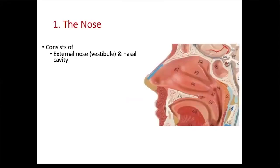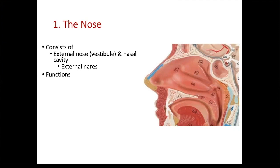The nose consists of an external nose. The openings, your nostrils, are called external nares. Air moves in through the external nares and goes into the area of the external nose called the vestibule, which is the entrance before you get into the nasal cavity. The function of the nose is to moisten, warm, and clean the incoming air, and in addition, the nose is involved in your sense of smell, or olfaction.